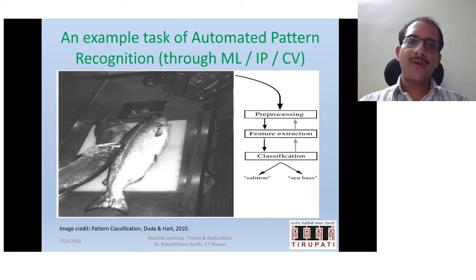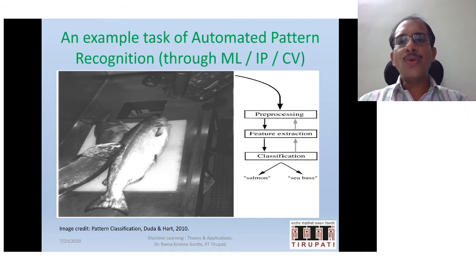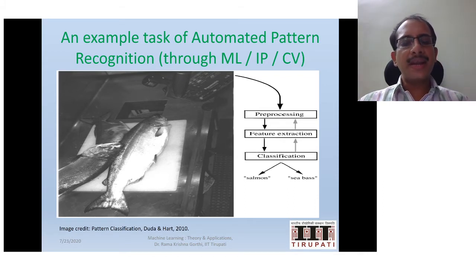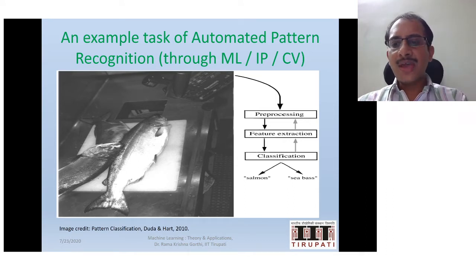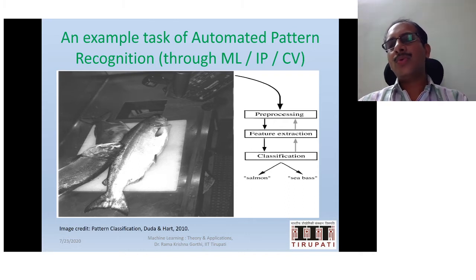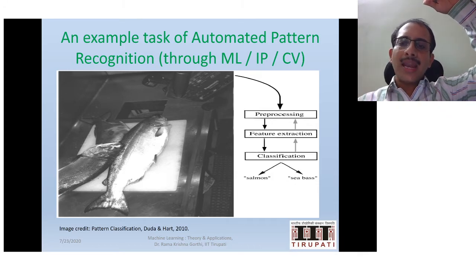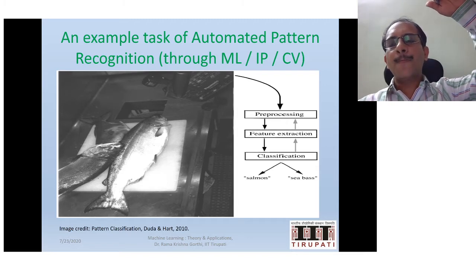Let us understand the process of machine learning, or how we enable learning for a computer, through an example. Consider an example where we want to automate the process of detecting the region of fishes and classify them into one of the categories. Assume we classify fishes coming on a conveyor belt through images taken from the top. What are the steps involved to put these fishes into two categories?